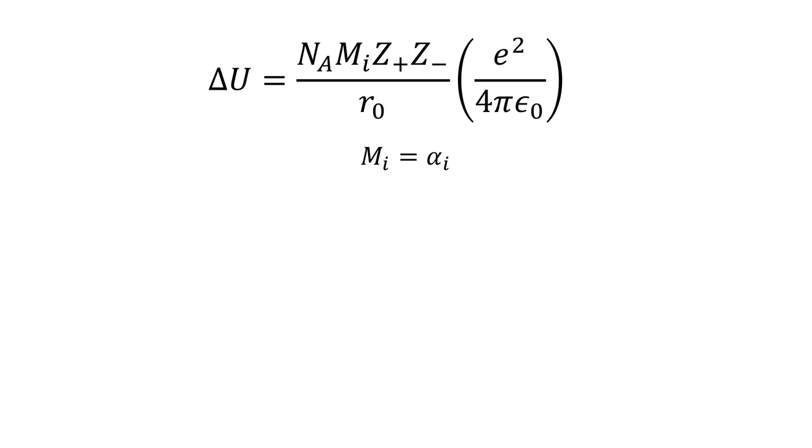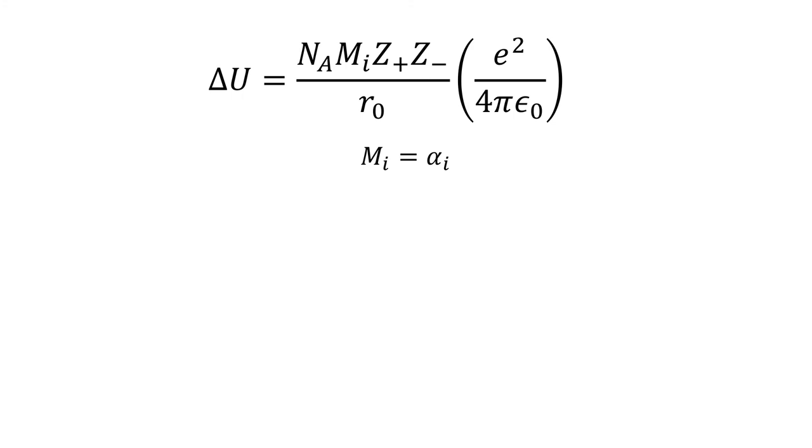Sometimes M is also written as alpha, where MI is equivalent to alphaI. The Born-Mayer equation corrects for repulsion between near neighbors by using the distance and a constant rho.